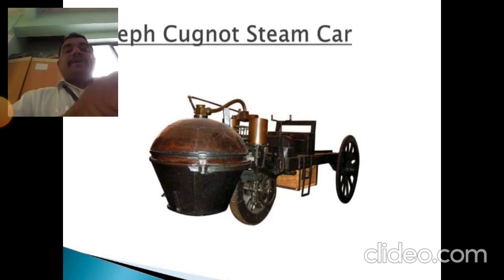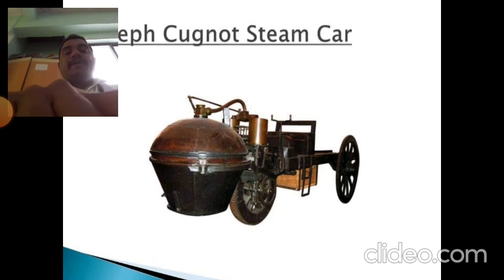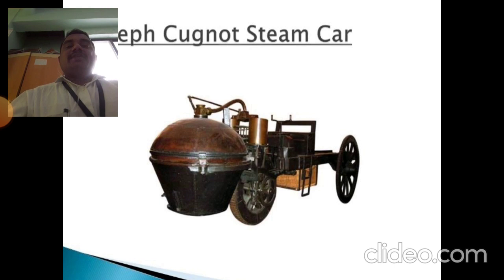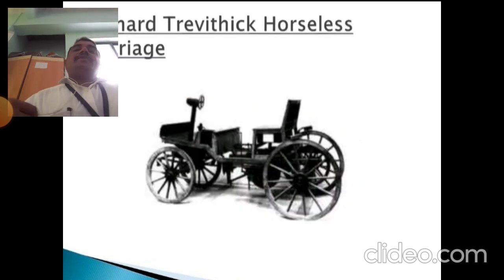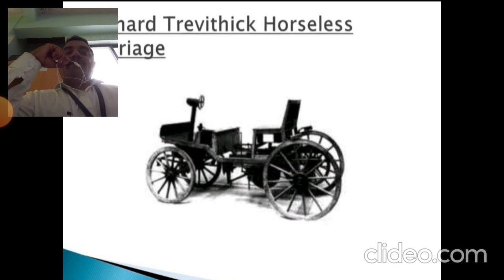The steam vehicle built by Joseph Cugnot had a dome-shaped boiler with a pipe connected to a cylinder. The cylinder was connected to a shaft, and the shaft was connected to the wheel. The outer side had wood for combustion, and pressurized air with steam powered the engine to run the vehicle. After this, Richard Trevithick built a lighter and smaller horseless carriage.